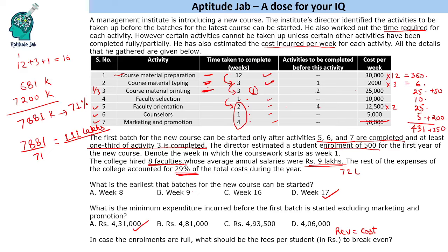Assuming enrollments are full, we divide by 500 students. 111 lakhs divided by 500: lakh divided by 1000 is 100, and since it is 500 we multiply by 2, giving 22,200. So in order to break even, they need to keep the fees at 22,200 per student, assuming all enrollments are full. This is the minimum fees to break even.